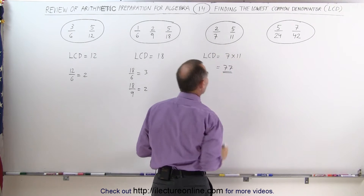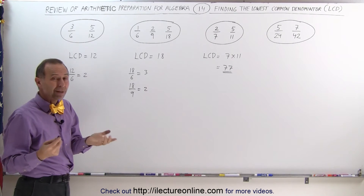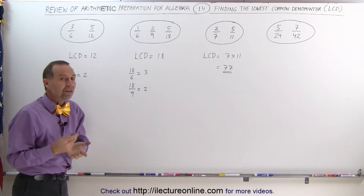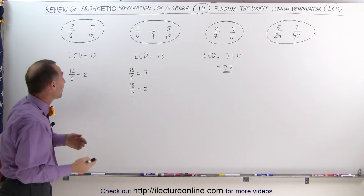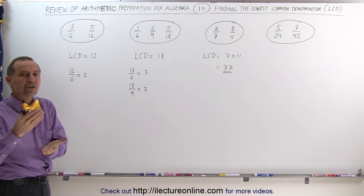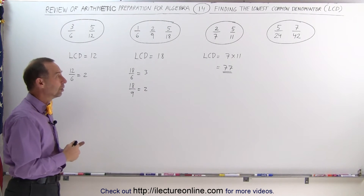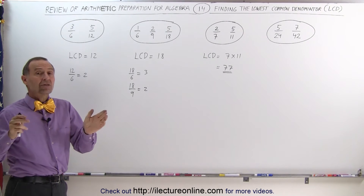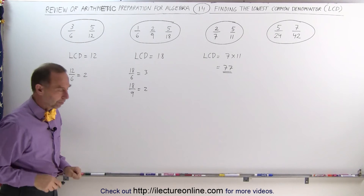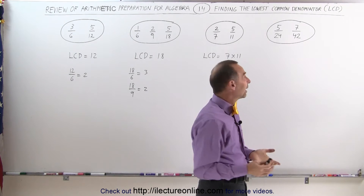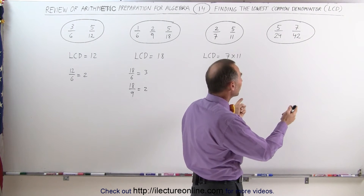77 is the LCD of these two fractions — we simply multiply the two denominators together. Could we have found the LCD for the first example by multiplying 6 times 12 to get 72? Well, 72 would be a common denominator, but not the lowest common denominator. It is perfectly fine to use a common denominator that isn't the lowest one — you could still use it to add and subtract fractions, though it makes things easier when you find the lowest, because the numbers are smaller. But when you have something like 24 and 42, multiplying them together gives a really big number, and hopefully there's a smaller common denominator available.